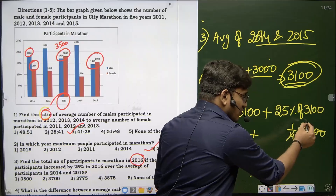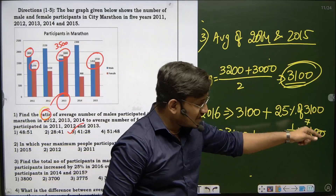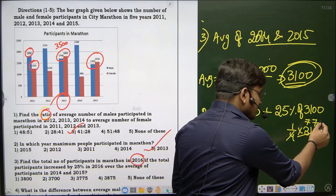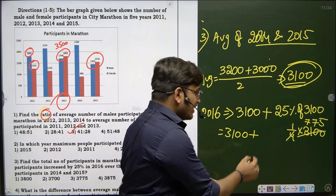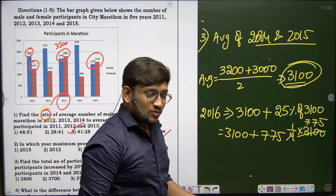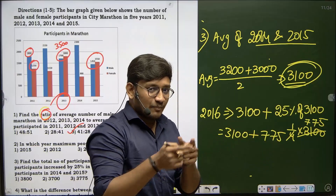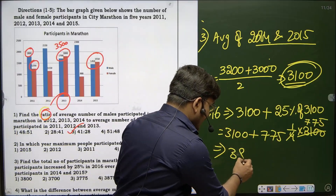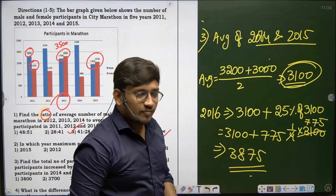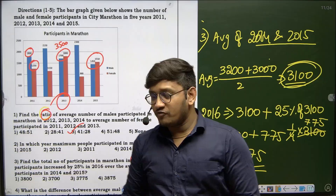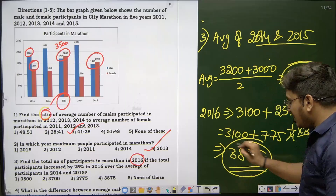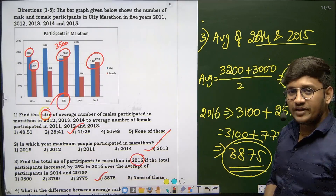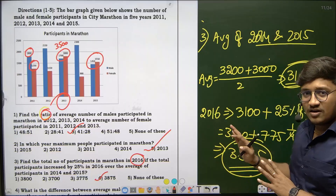So 3100 plus 775 equals 3875. These are the total number of participants in the marathon in 2016. The final answer is 3875, which is option 4. I hope you're all clear with this particular question.